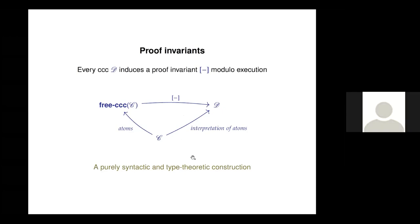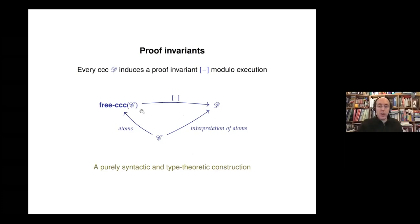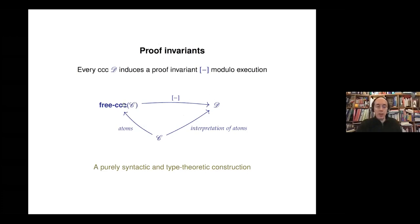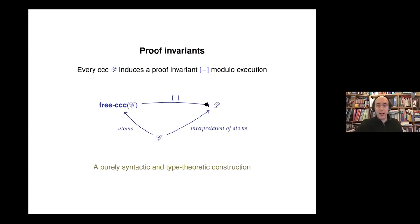This construction is extremely important for proof invariance. Since the lambda calculus can also be seen as a language of programs, there is a nice correspondence between proofs and programs. You can think of it as a simple programming language where the morphisms are programs, interpreted into a category — which could be sets and functions, a presheaf or sheaf category, or a topos — as long as it is a cartesian closed category, we have this beautiful functor.